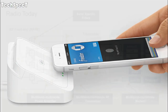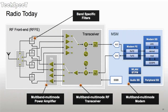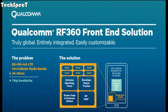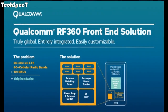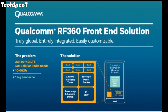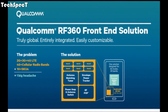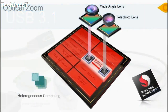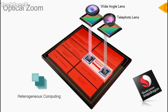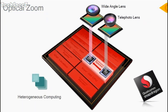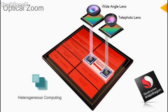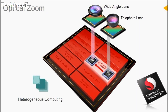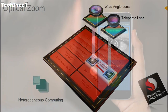Radio frequency: Qualcomm RF360 front-end solution. USB 3.1. Camera support: up to 16 megapixel for dual camera, up to 32 megapixel for single camera.